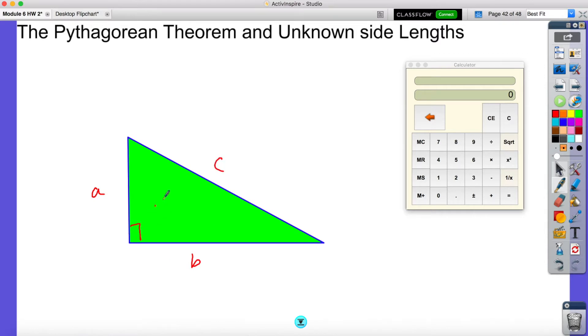Now A and B can flip spots, but the most important thing is the hypotenuse is the longest side. It is always across from the 90 degree angle. So this right here is my hypotenuse. It's always C. So the formula is A squared plus B squared equals C squared. Now we're going to use this formula to find missing sides of a right triangle.